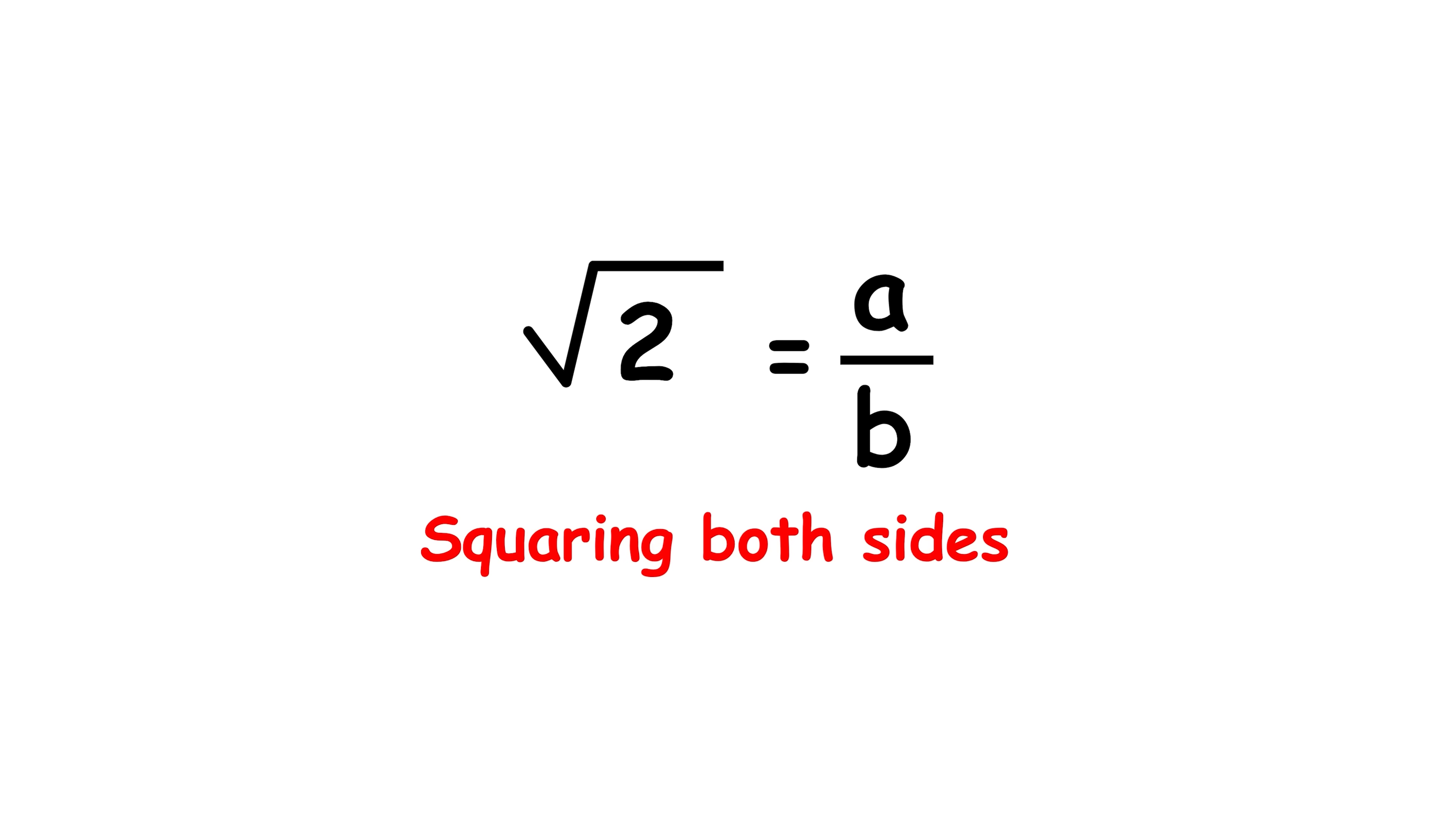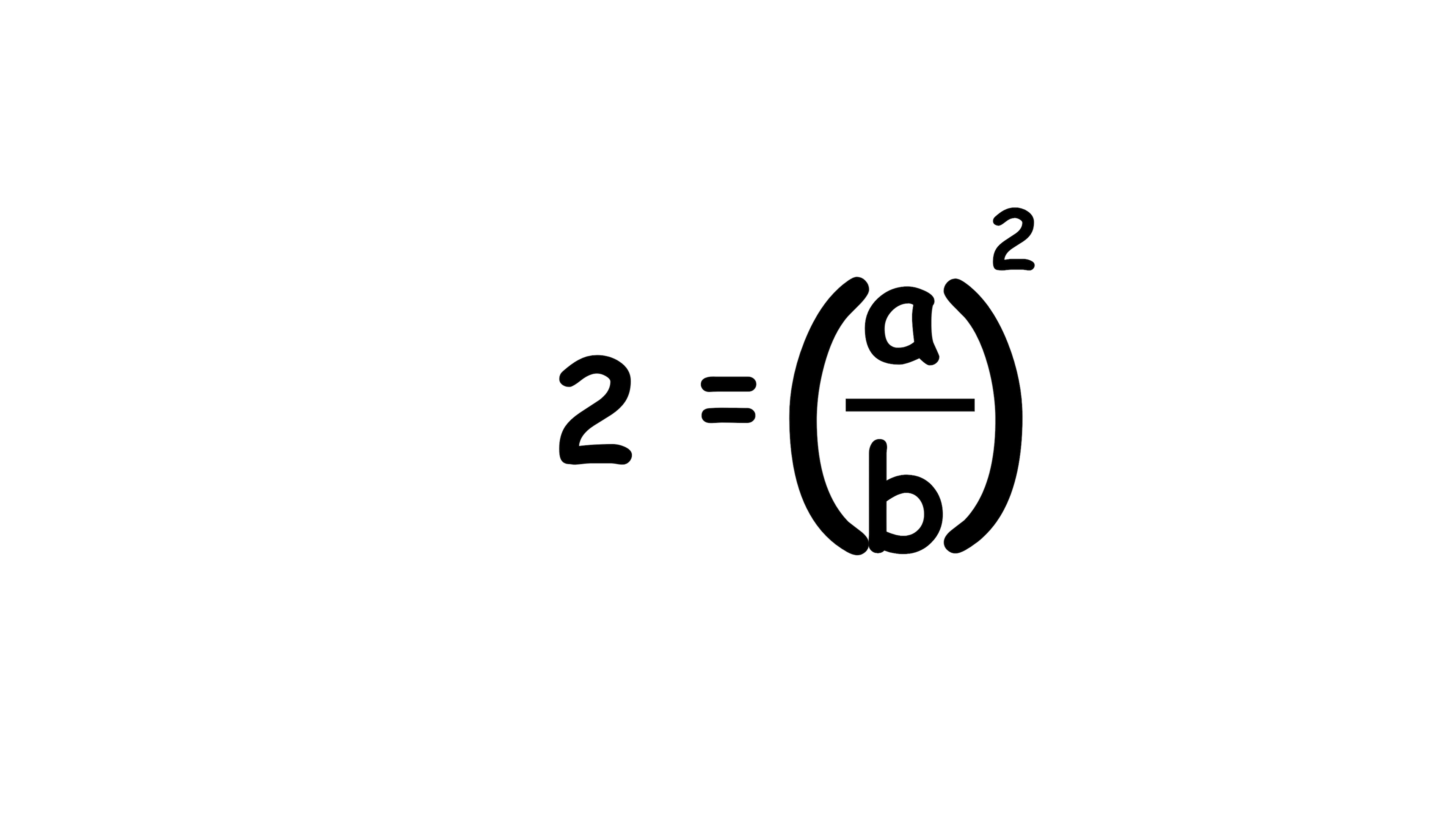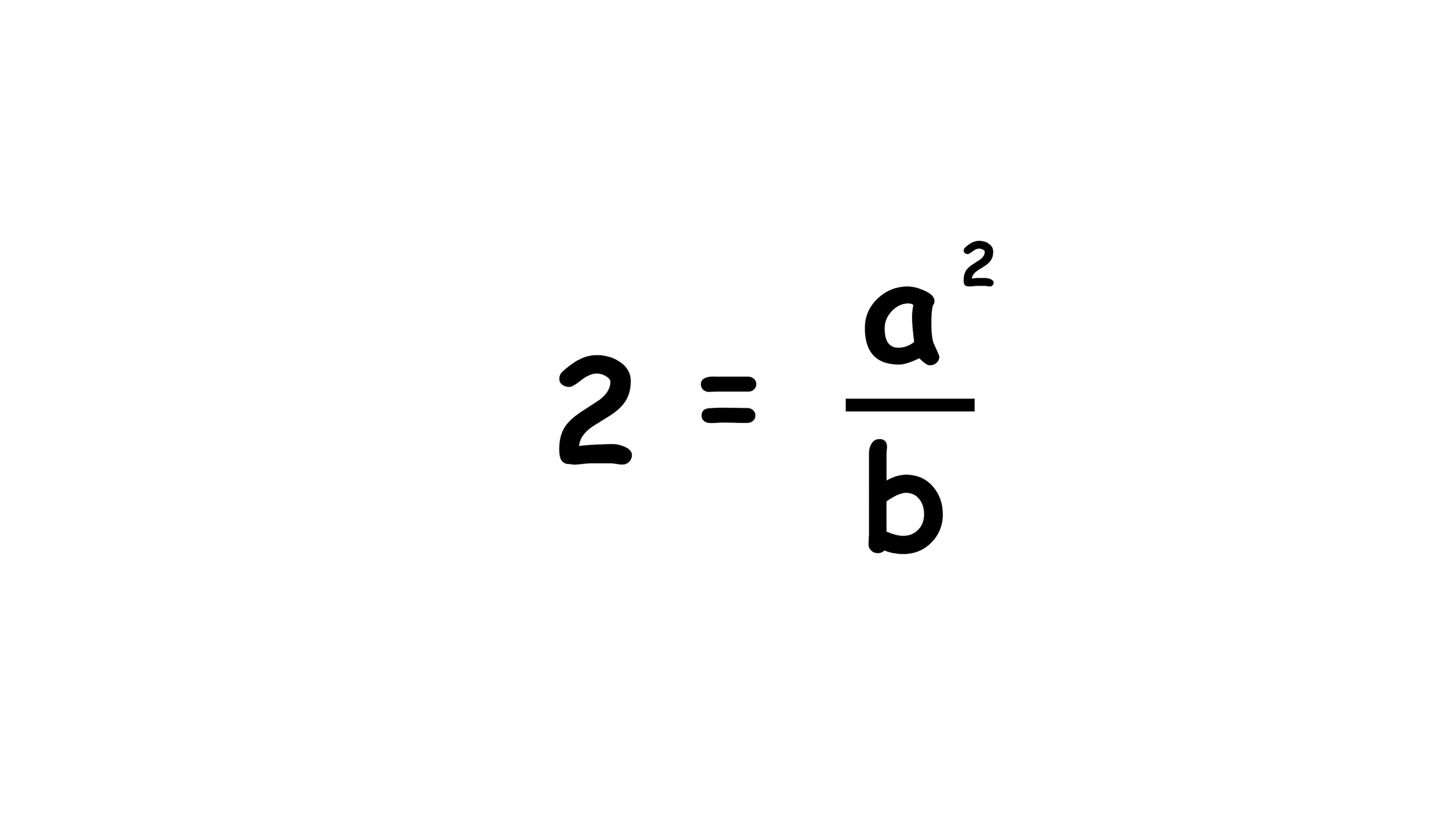Squaring both sides of this equality gives us square root of 2 squared equals a over b squared. And the square of a square root is just the number itself, so this becomes 2 equals a over b squared. Using exponent properties, we can distribute the exponent of 2 into the numerator and denominator, so we get 2 equals a squared over b squared.